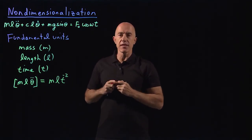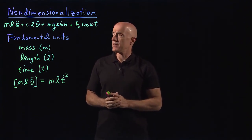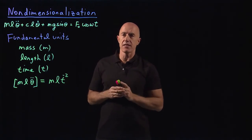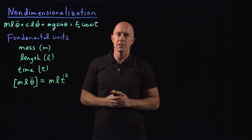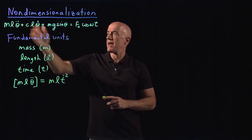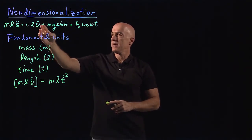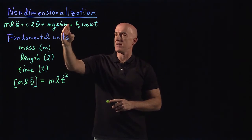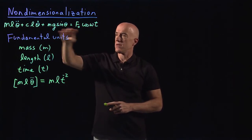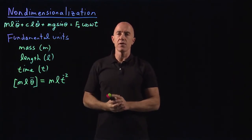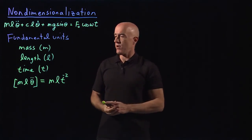A very fundamental understanding of physical equations is that a physical equation is only valid if every term in that equation has the same units. So m·l·θ̈ has to have the same units as c·l·θ̇, the same units as m·g·sin(θ), and the same units as f₀·cos(ωt). The units across an equation always have to be the same — otherwise it's not a valid physical equation.